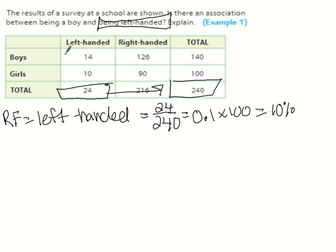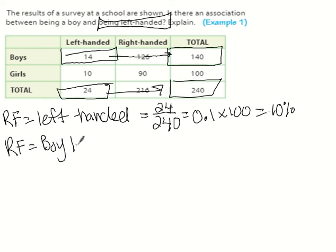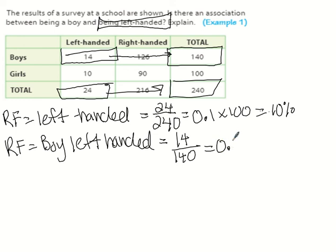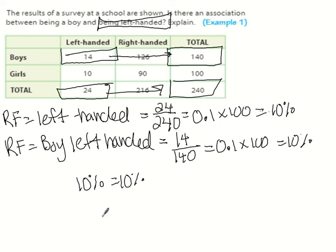Now we look at boys that are left-handed and compare it to the total boys. The relative frequency of boy and left-handed is 14 out of 140. That also equals 10%. Since 10% equals 10% — there's no change — you're not more likely to be left-handed if you're a boy. There is no association between being a boy and being left-handed. For there to be a relationship, there has to be a difference, and since they are equal, there is no association.